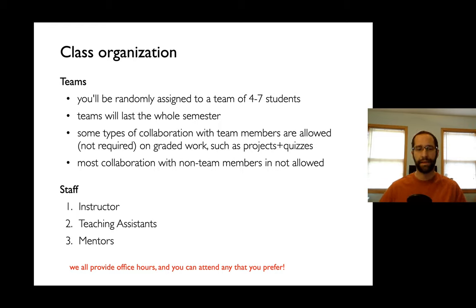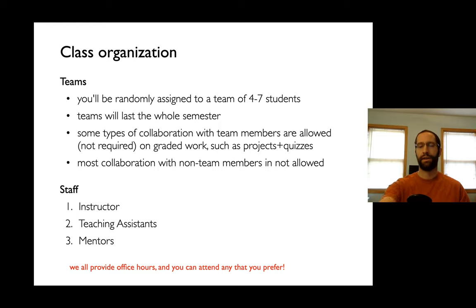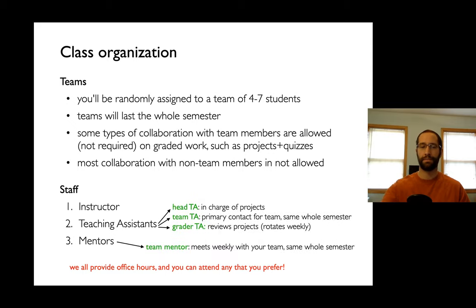We have different types of staff. There's an instructor, which is me, and I have a few teaching assistants. I also have six people who are mentors — they recently took this course themselves, did well, and want to help others learn. All three of these types of people will be providing office hours and you can attend any of those you prefer. We're going to have one of our TAs designated as the head TA. She's going to be in charge of projects — so if you think there's a mistake on a project or the tests are wrong, she's going to be the one to contact. I'll be sharing that information later.